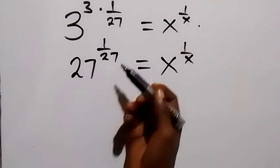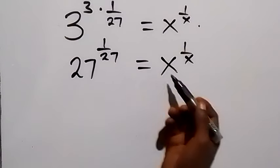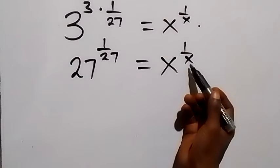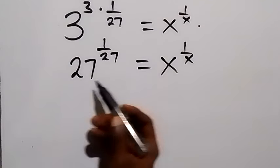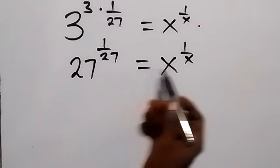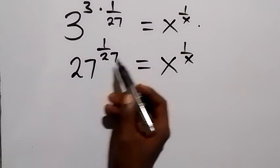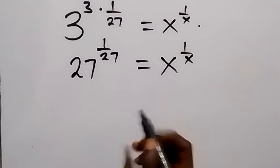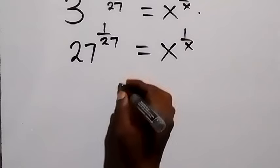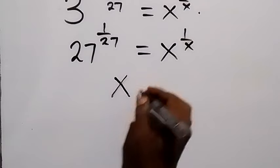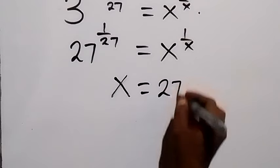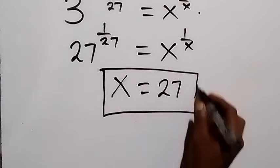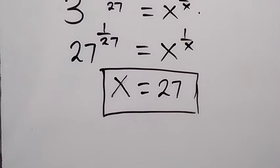From here we have a number raised to the power 1 over that number, and the same thing here — a number raised to the power 1 over that number. So clearly, x will be 27, and here 1 over 27 equals 1 over x, so x is also 27. We can conclude that x equals 27. Here is the solution to the problem. Thank you for watching — subscribe and like this video. See you in the next class, bye for now.